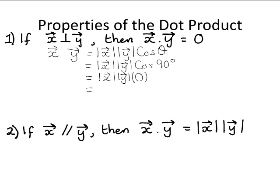When you multiply the modulus of vector x by the modulus of vector y, it results in a scalar, which is just a number, and any number multiplied by zero is zero. So you've proven this result. If you think about the i and j vectors, they're perpendicular to each other, so the i vector dotted with the j vector is equal to zero, and the j vector dotted with the i vector would also give zero.